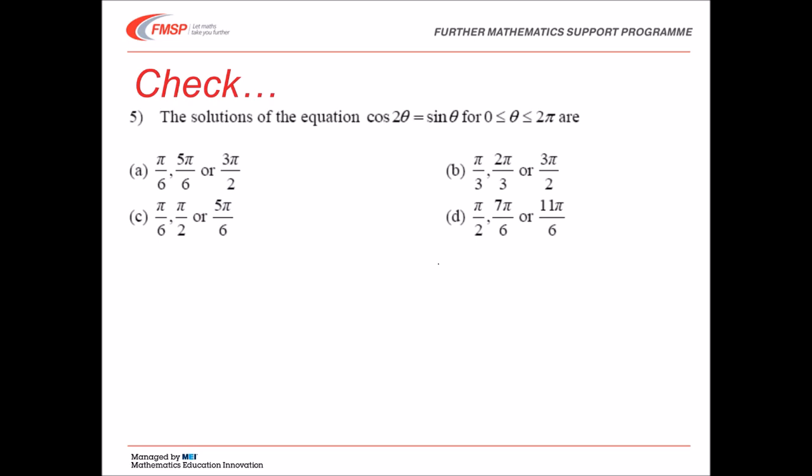Here's the solution then. Cos of 2 theta equals sin theta. We'll use 1 minus 2 sin squared theta, so that I've got all sines, rather than a mix of sines and cosines. So 1 minus 2 sin squared theta equals sin theta. I'm going to collect on the left-hand side, but then swap them round. So that's 2 sin squared theta plus sin theta minus 1 equals 0. This is a quadratic equation in sin theta.